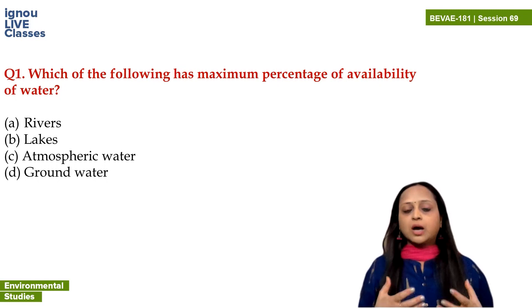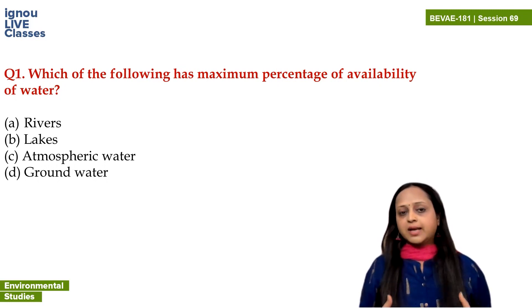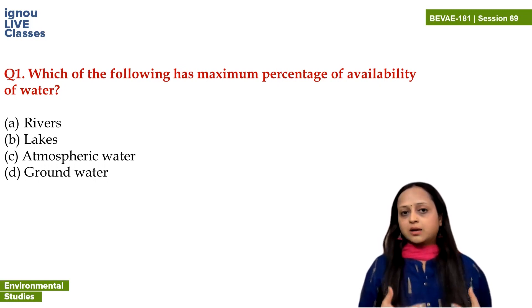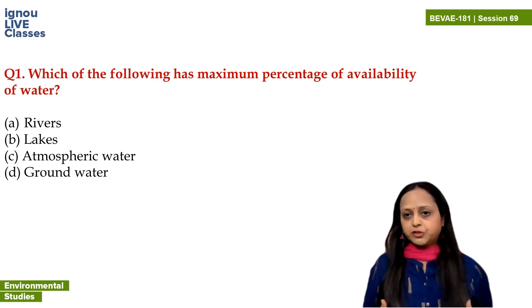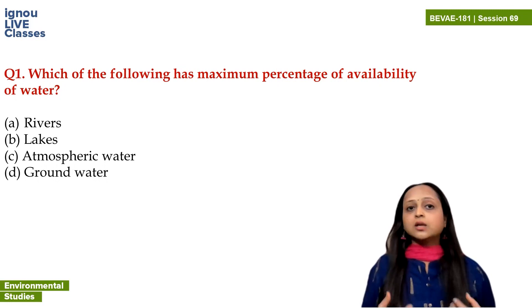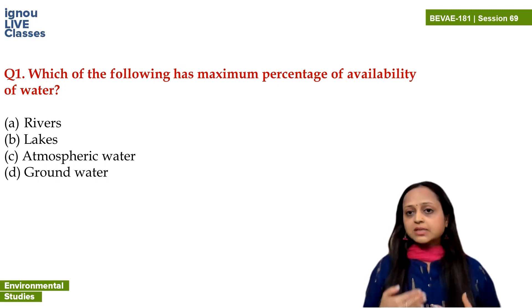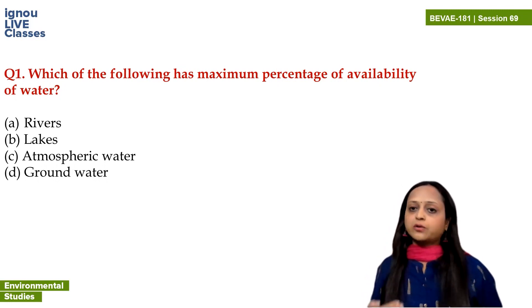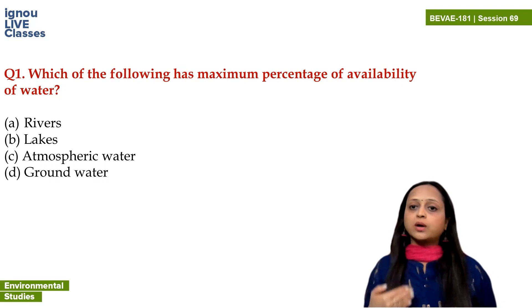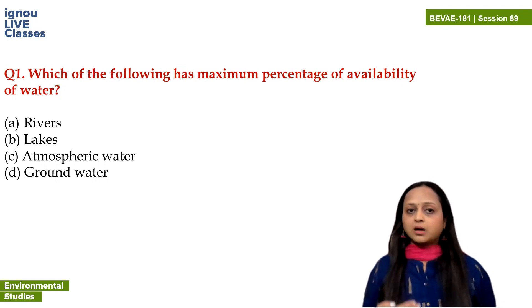Now considering the options — river, lakes, atmospheric water, or groundwater — these are the freshwater sources. River, lake, and groundwater are all sources of freshwater on earth.